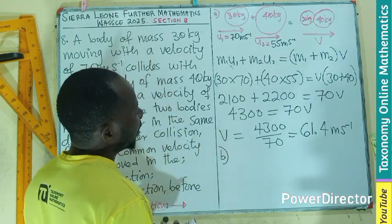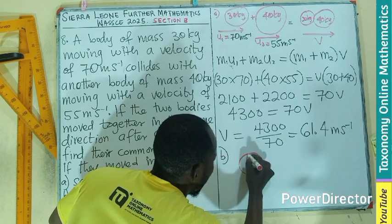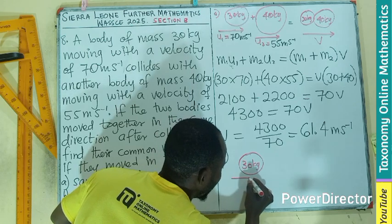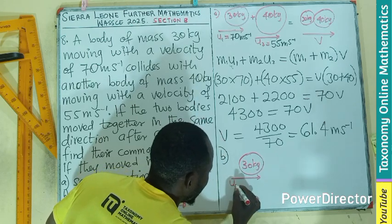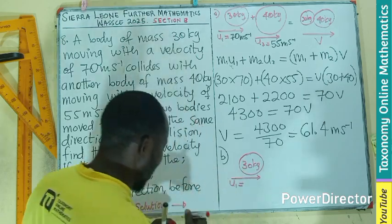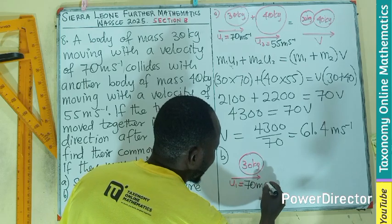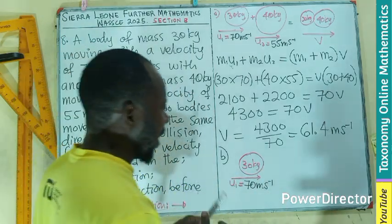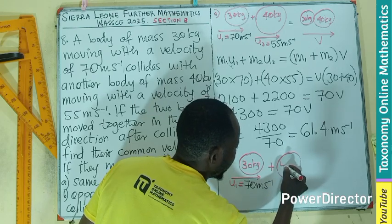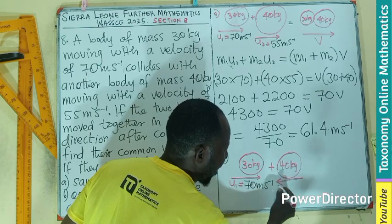Let's go for the B part. If I want to draw the diagrams again, let's say we have this as 30 kg, which is moving in this direction. Velocity 1 still with 70 meter per second. Then the second body, which is bigger, 40 kg now moving in the opposite direction.